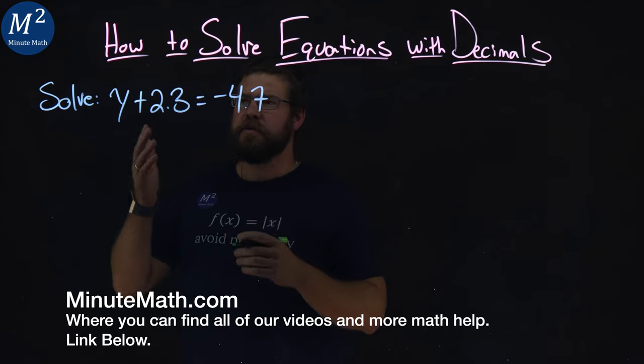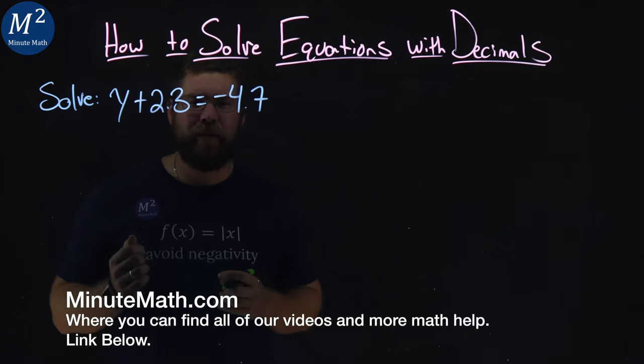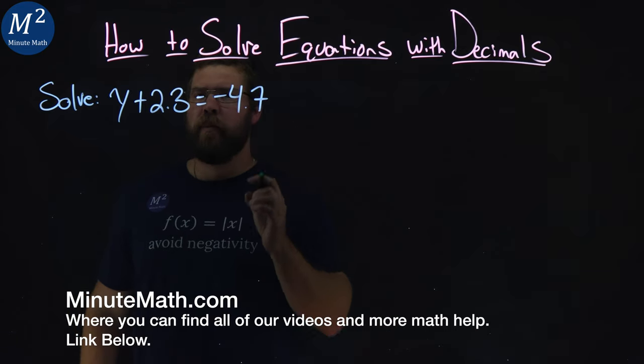We're given this problem right here. Solve y plus 2.3 equals negative 4.7.